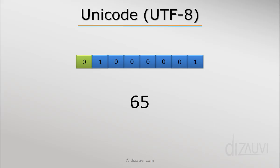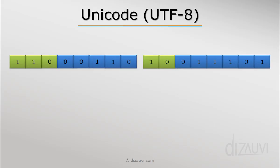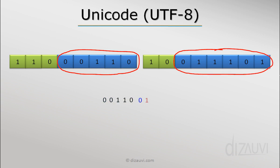For multi-byte sequences, the marker bits (shown in green) do not represent data or the code point. We take the non-marker part from the leading byte, write down those bits, then append the bits from the continuation bytes left to right. This gives the binary code point, and a regular binary-to-decimal conversion yields the decimal code point. There is a maximum code point value beyond which one more byte must be added, shown in the reference table.